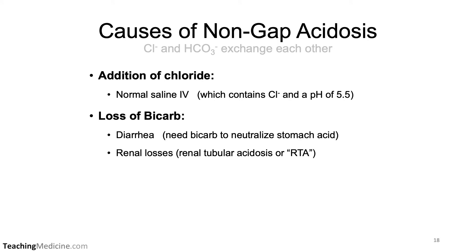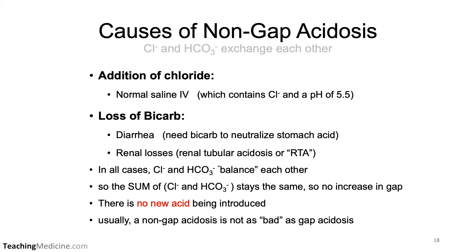The differential diagnosis for a non-anion gap acidosis requires that chloride increases and bicarb decreases. Addition of normal saline intravenously is the most common cause. Direct loss of bicarb through the GI or GU systems — either diarrhea or renal losses — will also result in a non-anion gap metabolic acidosis. In all cases, chloride and bicarb balance each other so the sum stays the same, there is no increase in the calculated anion gap, and no new acid is introduced into the body. A non-anion gap acidosis is usually not as dangerous as an anion gap acidosis.